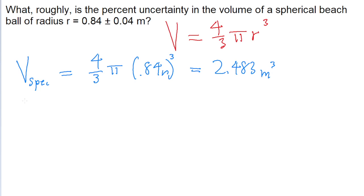Now let's use the same formula two more times for the minimum and maximum volumes that the ball can supposedly have. For the minimum, that's four-thirds pi times 0.84 meters minus 0.04 meters, which is 0.80 meters cubed. Put that into a calculator, and the lowest possible volume of the beach ball, according to the uncertainty, is 2.145 cubic meters.